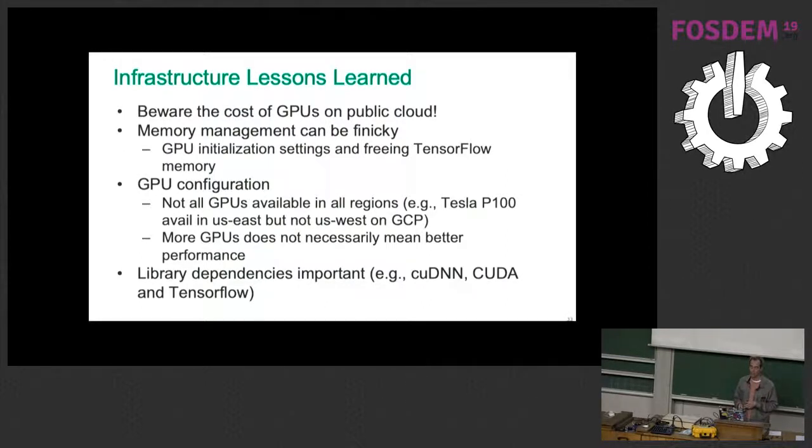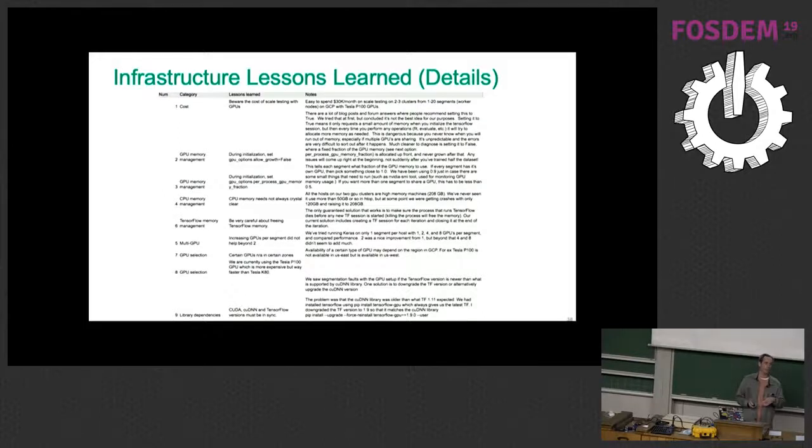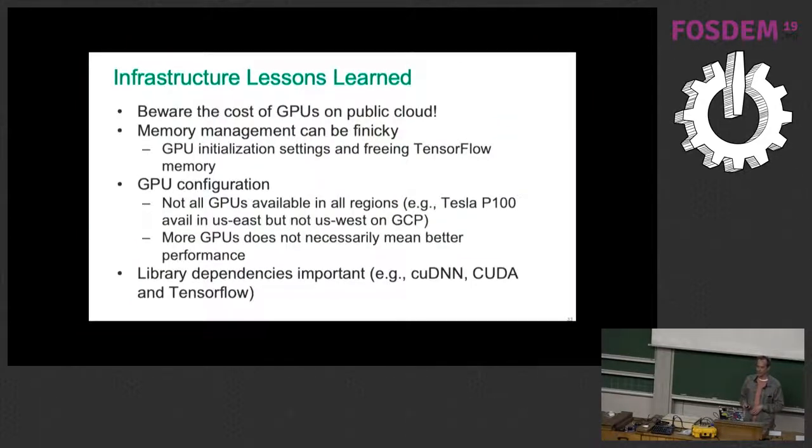On the infrastructure lessons learned, I'd say my number one thing is beware of the cost of GPUs on public cloud. We had some sticker shock when we got our bill after the first month. The other thing is memory management can be very finicky - GPU initialization settings and freeing TensorFlow memory. There's a lot of folklore there. I put at the back of this deck a more detailed list. So if anybody's having issues around GPU memory and such, we found a bunch of blog posts that were helpful. A lot of stuff we had to fail and learn on our own. There's a lot of details here if you're running into challenges.